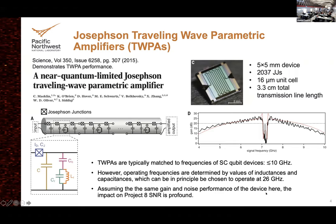This device has sufficient gain over a couple of gigahertz, minus a suck-out at the pump frequency — it's a four-wave mixing device, so you can't operate right at the pump frequency. But I only need a few hundred megahertz, which I can get offset from that. This device operates at 7 gigahertz, made for qubits that typically operate below 10 GHz. I need it at 26 GHz, but the operating frequency is just determined by the values of these capacitors and inductors — we're sure that will work, but we haven't done it yet.